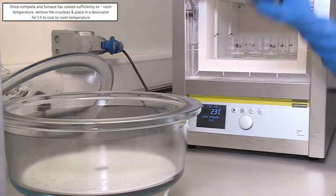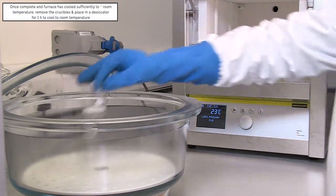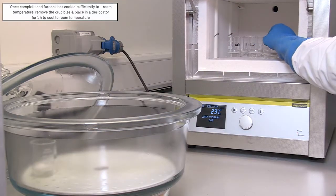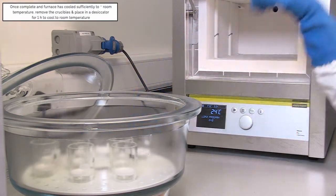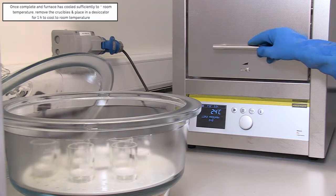Once this cycle is finished and temperature is approximately at room temperature, remove crucibles from the furnace and place warm crucibles in a desiccator for one hour to cool to room temperature.